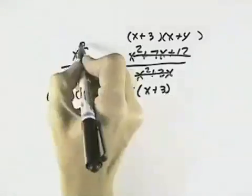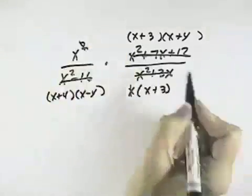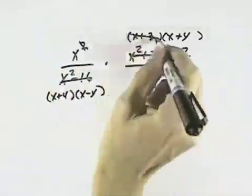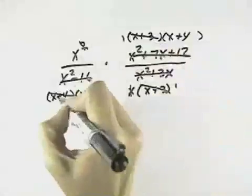I can see a common factor of x leaving x in the numerator, common factor of x plus 3, I can cancel that out, and a common factor of x plus 4.